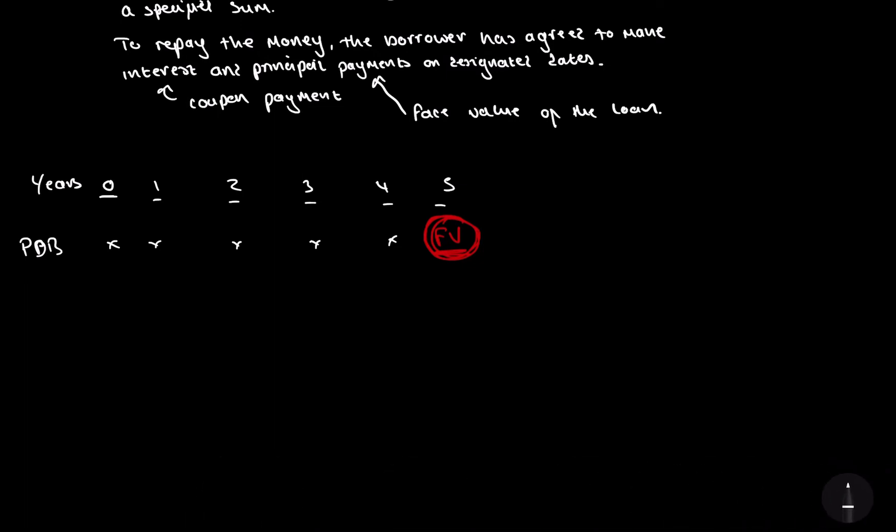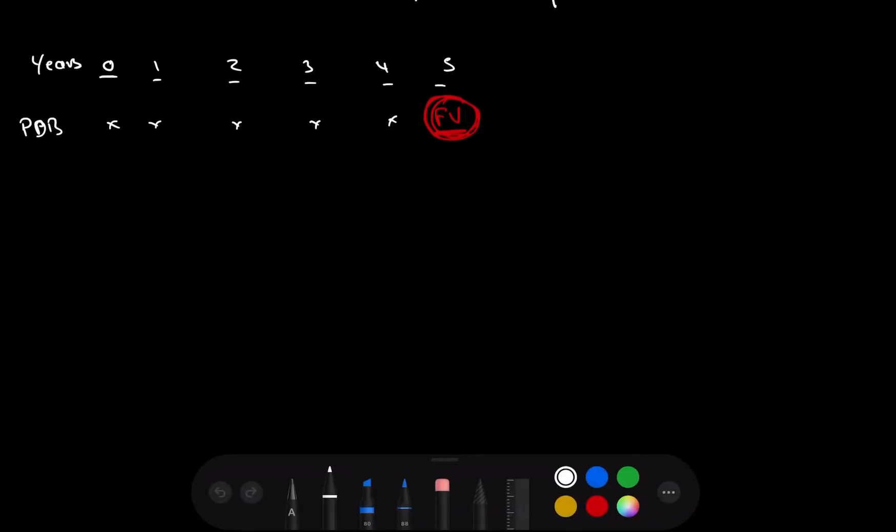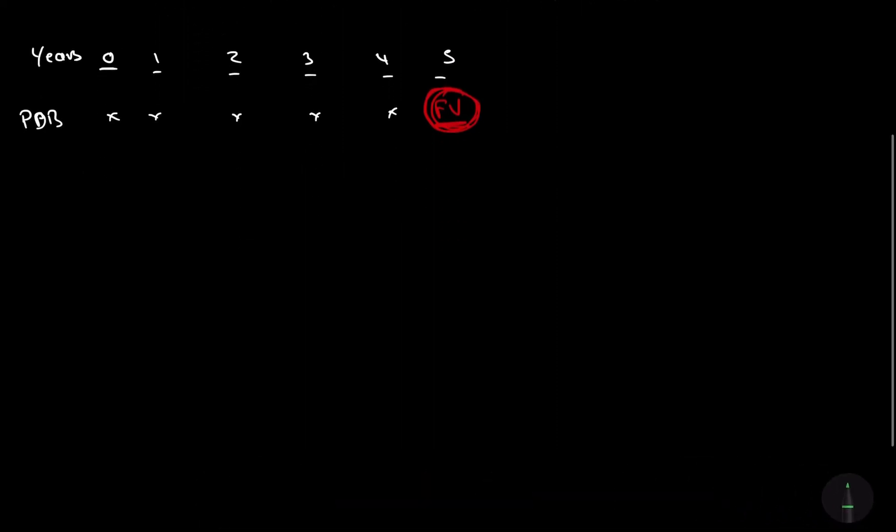So I'll show you how we work this one out. So we have a basic formula. I'll write this formula quite large so you can understand it. So the present value. So that's the current value of the bond.